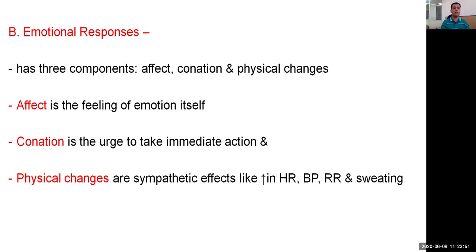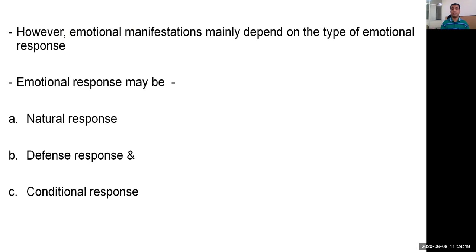The emotional response phase has three components: affect, conation, and physical changes. Affect is the feeling of the emotion itself. Conation is the urge to take immediate action in response to the emotion being felt. Physical changes are sympathetic effects like increased heart rate, blood pressure, respiratory rate, and sweating that accompany emotional responses. The emotional manifestation may depend on the type of emotional response, which can be a natural response, defense response, or conditioned response.